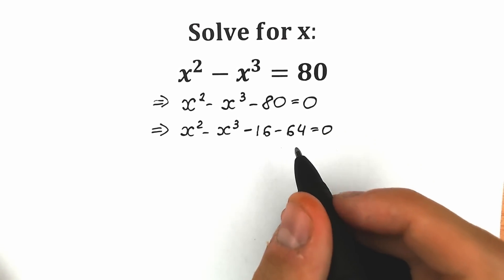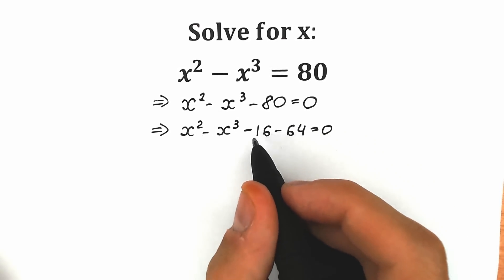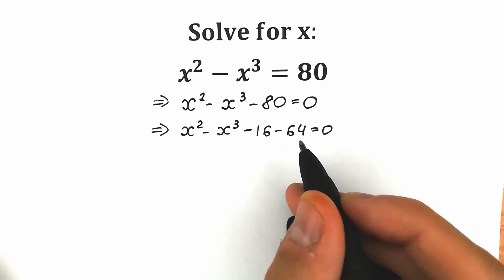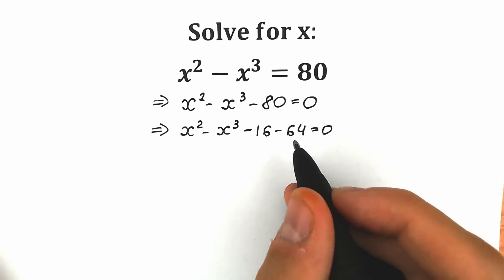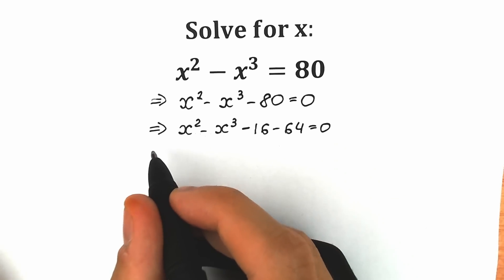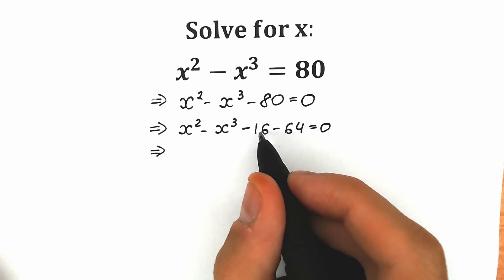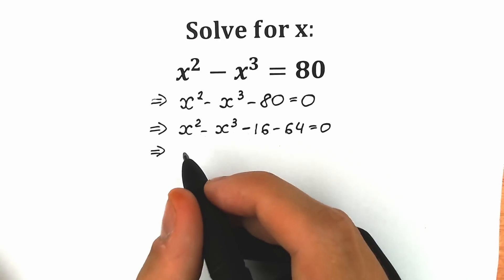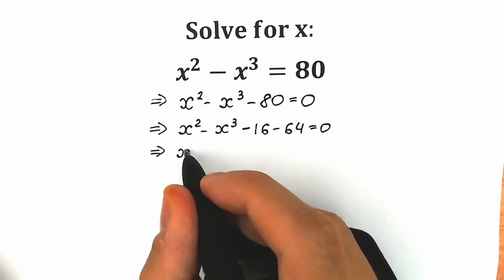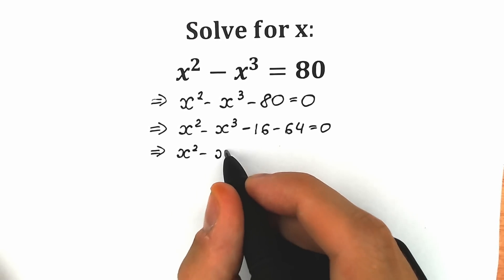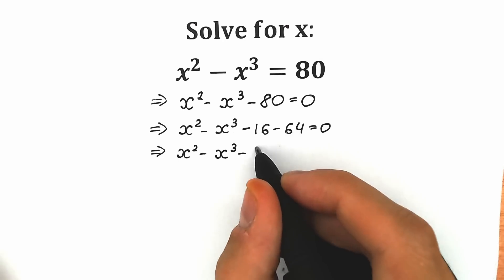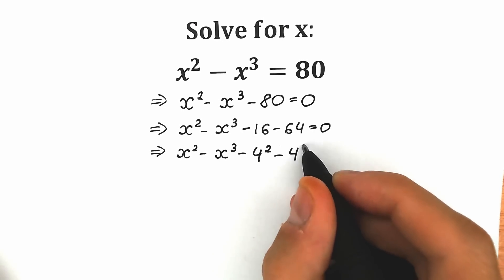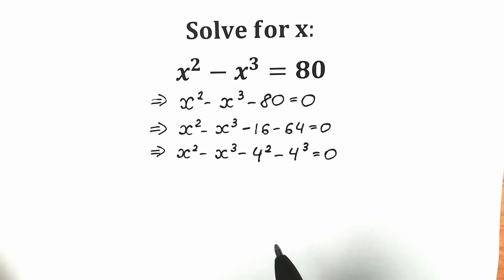If you look closely, 16 is 4 squared — very obvious. And 64 is 4 cubed. This looks like a substitution. So instead of 16 we write 4 squared, and instead of 64 we write 4 cubed. As a result we have x squared minus x cubed minus 4 squared minus 4 cubed equal to zero.